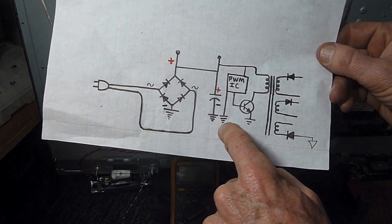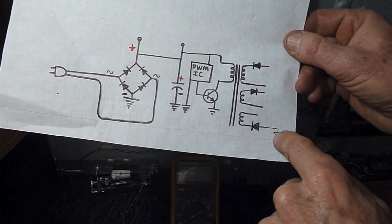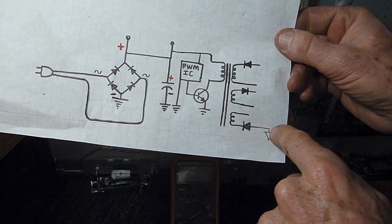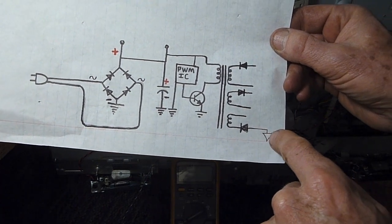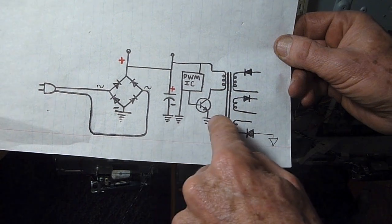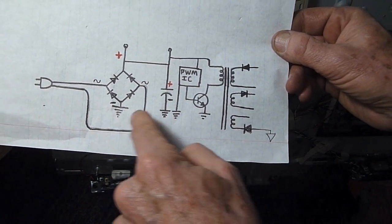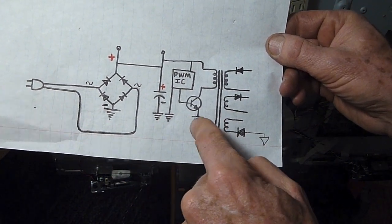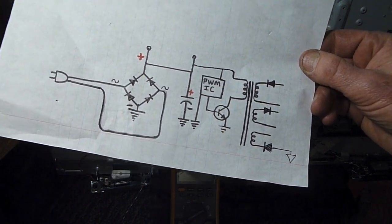And you might note, by the way, here we've got a different symbol here on this output, indicating it's got an isolated ground from this. Now I've seen them use alternating ground symbols. All I know is that if I'm seeing one type of ground symbol here and a different type here, that usually lets me know that it's isolated.